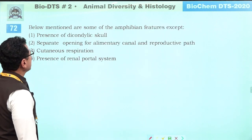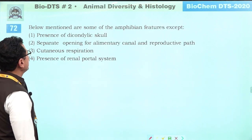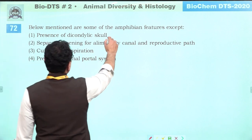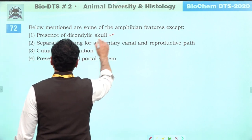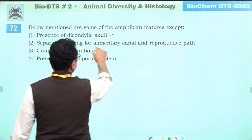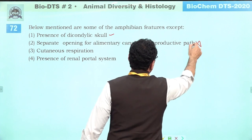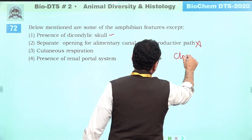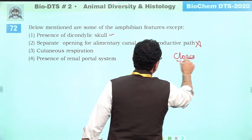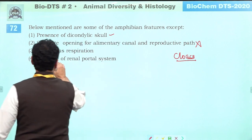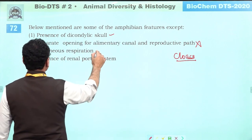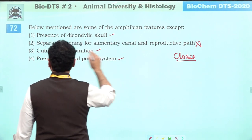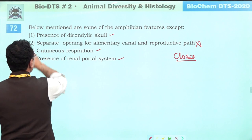Below are some amphibian features — find the exception: dicondylic skull is a feature — correct. Separate openings of alimentary canal is not correct — amphibians have a common opening called cloaca. Cutaneous respiration — yes. Renal portal system — yes. Answer is two: separate openings of alimentary canal.